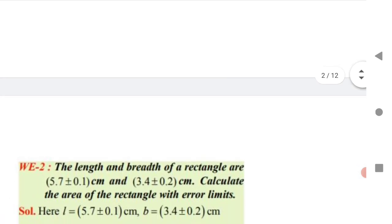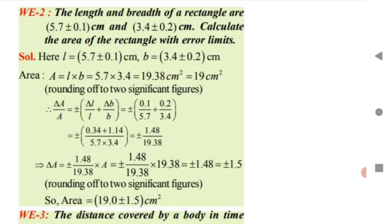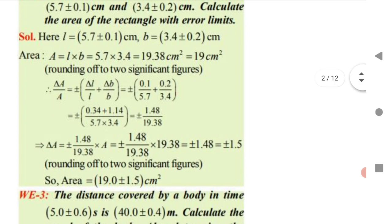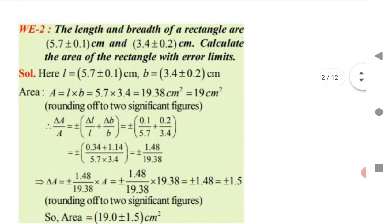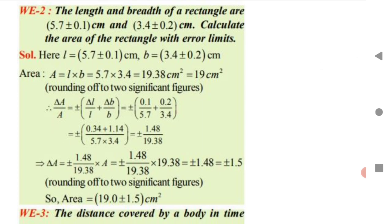One MCQ covers four to five questions from this topic. Next: the length and breadth of a rectangle are given. Calculate the area of the rectangle with error limits. To find the area, multiply length by breadth. But since error limits are required, we need the error formula.